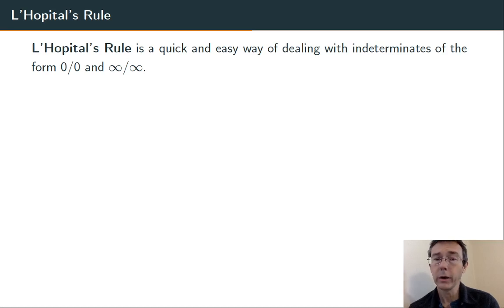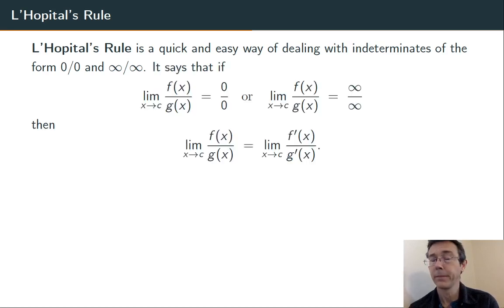L'Hopital's rule is a quick and easy way of dealing with indeterminants that have the form 0 over 0 or infinity over infinity. It says that when you're doing a limit like that, you can differentiate the numerator, differentiate the denominator, and then take the same limit, and you should get the same answer.